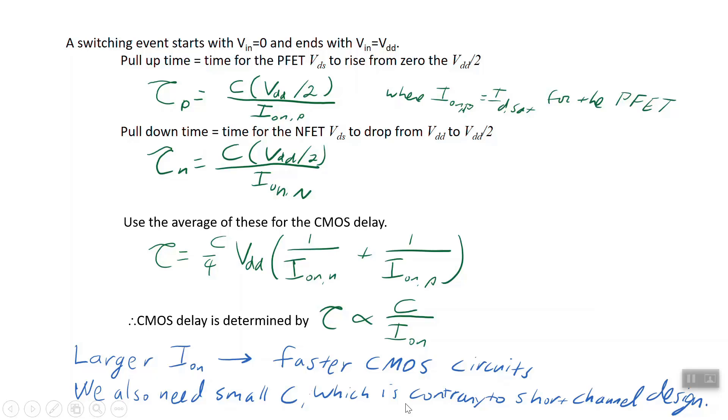Smaller capacitance as well will make it faster. It's just that the short channel design tends to demand small capacitances. We try to make the oxide thickness as small as possible, which again does not give you a small capacitance. So there are some design trade-offs that will come into play there. I will stop with that and we'll do a couple of example problems on CMOS next.